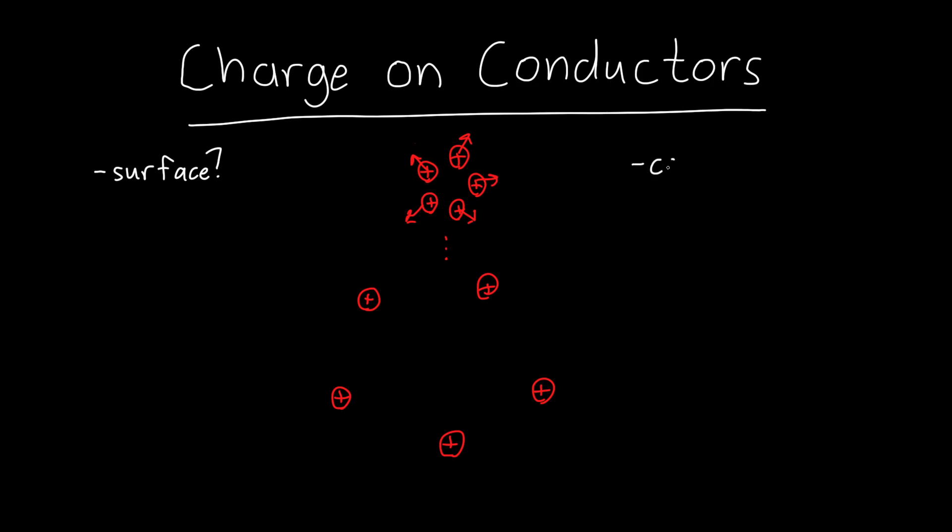So how do things change when I have a conductor? Well, first of all, what is a conductor? A conductor is just some blob of material. It might be a solid, probably a solid. It might be a liquid or a gas. But inside a conductor, charges are allowed to move freely.